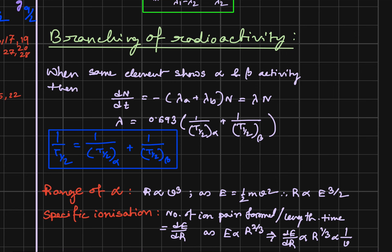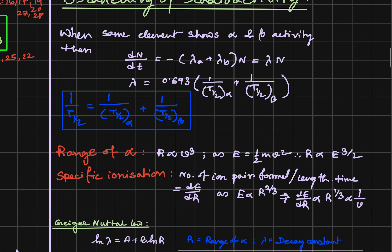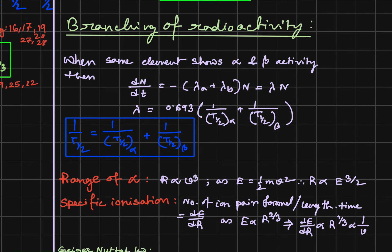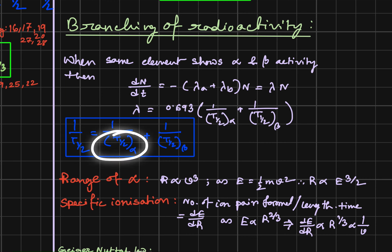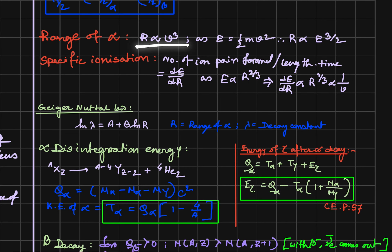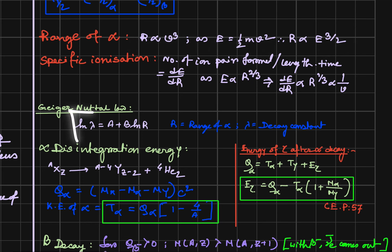What is branching ratio? For example, the same nucleus decays by both alpha and beta decay. In that case, the total half-life satisfies: 1/T_total = 1/T½(alpha) + 1/T½(beta). The range of alpha is proportional to v³. The Geiger-Nuttall law relates the range R to the decay constant λ. The alpha disintegration energy T_alpha is the Q value for the reaction times (1 − 4/A). The energy of gamma after alpha decay is E_gamma = Q(alpha decay) − E_alpha × (1 + m_alpha / M_Y).